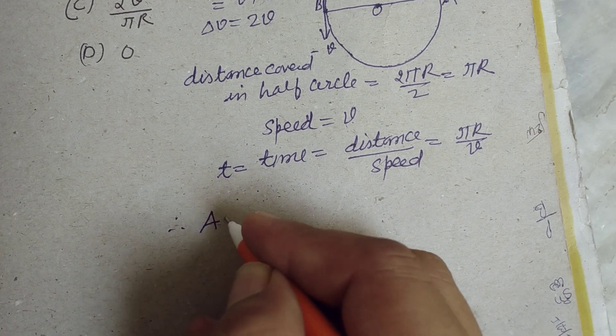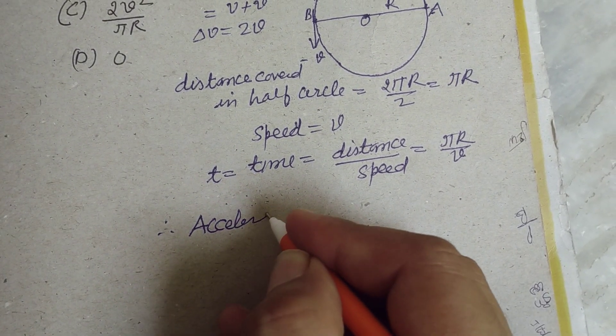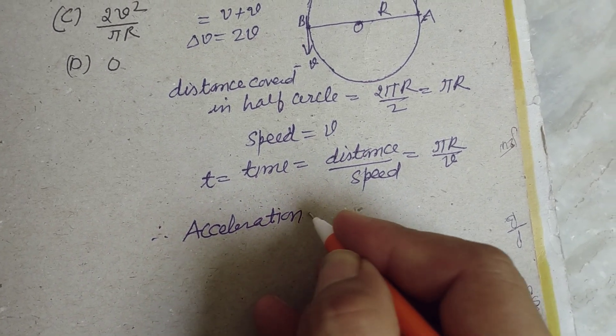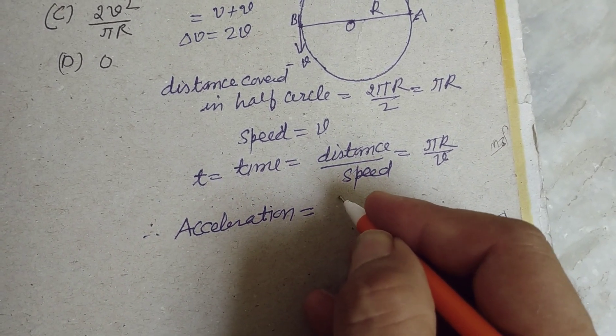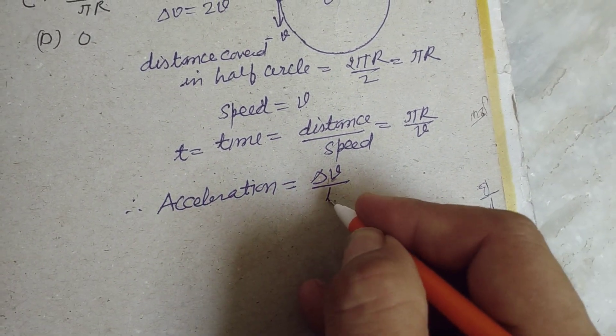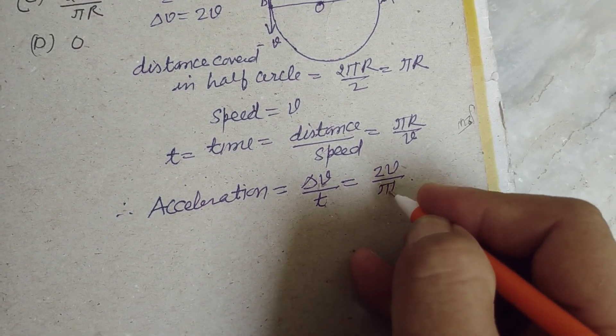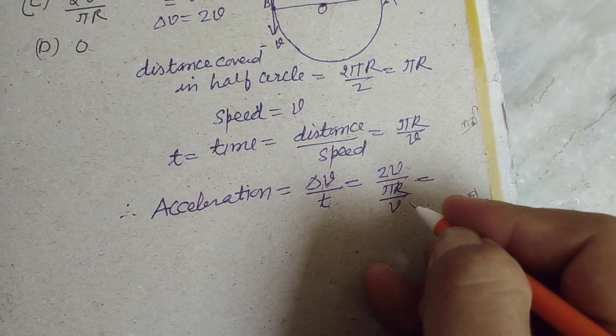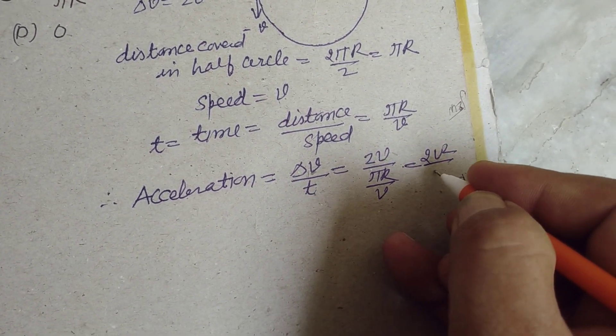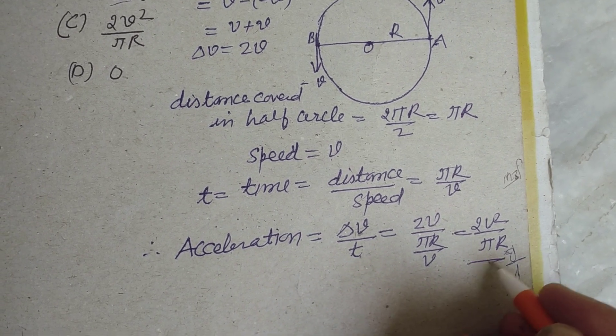Therefore acceleration, or we can say average acceleration, equals change in velocity upon time. So this is 2V upon πR/V. So V comes in the numerator, so 2V² upon πR. 2V² upon πR is the answer to this question.